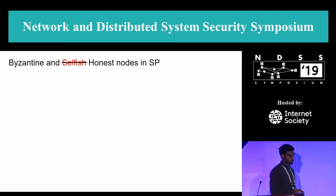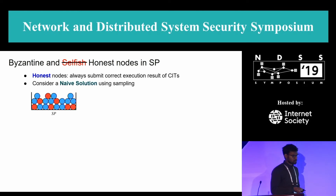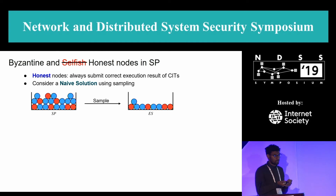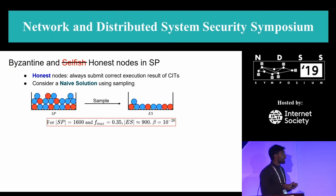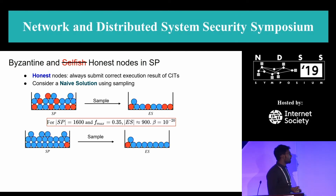Let's first see our solution with only Byzantine and honest nodes. Honest nodes strictly follow any given protocol. In the naive sampling approach, we select a large enough ES so that with high probability the majority are honest, then take a majority vote among submitted solutions. However, the required ES size is very large — for example, with an SP of 1600 nodes and a worst-case Byzantine fraction of 0.35, we'd need an ES of size 900. Also, this mechanism is oblivious to the actual fraction of Byzantine nodes.